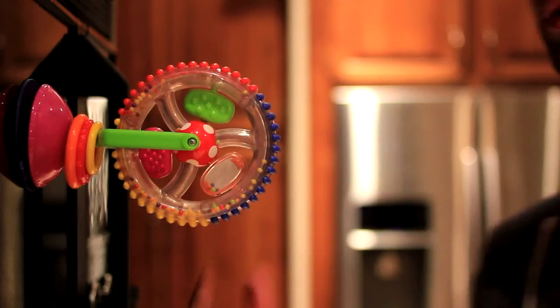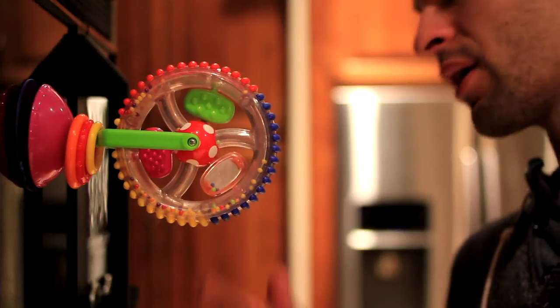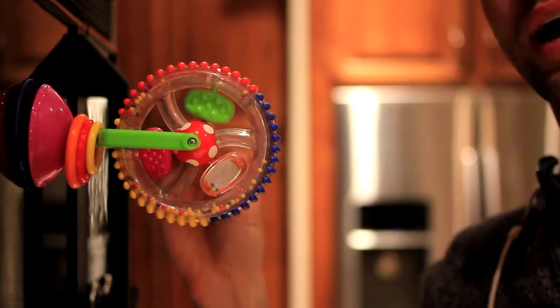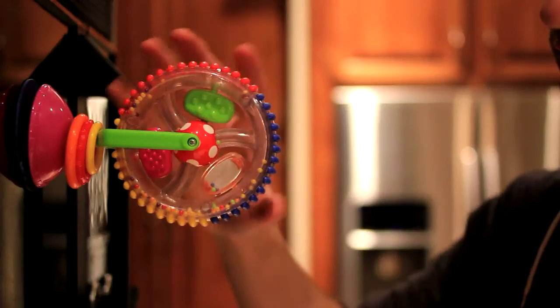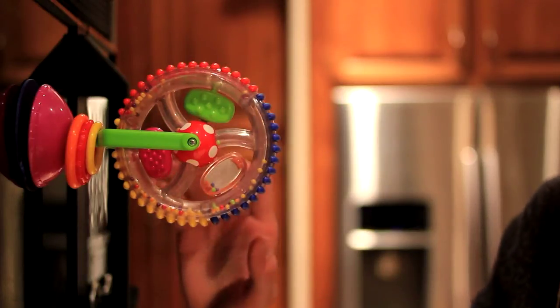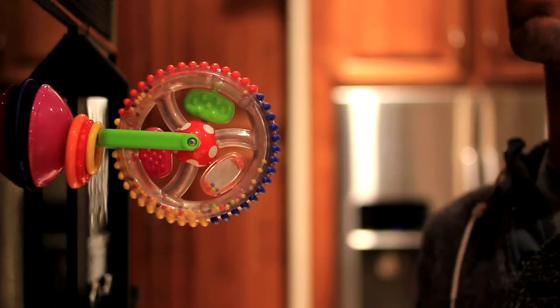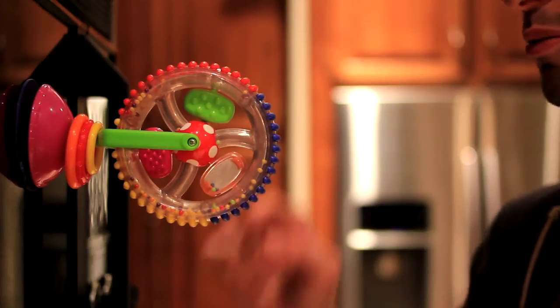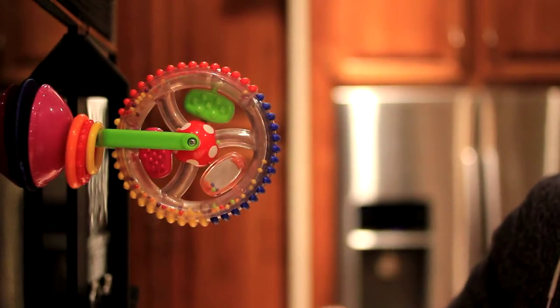Now, how this wheel spins depends upon a couple of things. One, how is the mass distributed about this axis of rotation, or this wheel's moment of inertia. The more or larger the moment of inertia is of an object, the more difficult it is to get spinning.